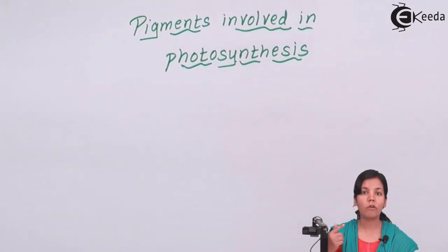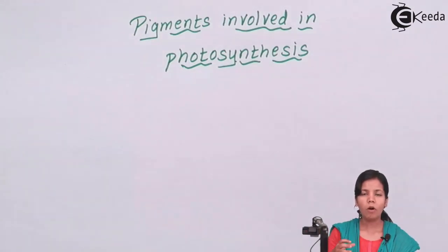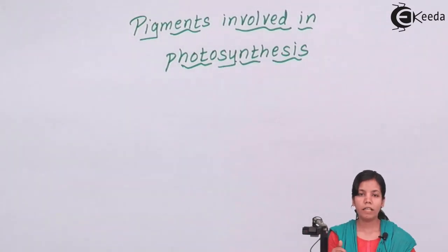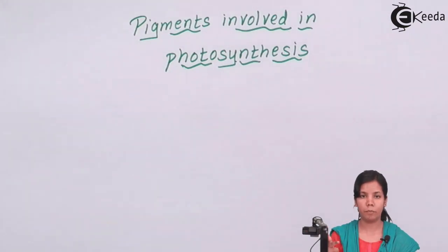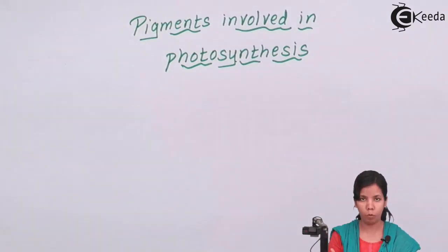Remember the structure of the chloroplast? Inside the grana there were certain pigments — these are those photosynthetic pigments. Among all the photosynthetic pigments, chlorophyll A is the most important one. It is blue-green in color and shows maximum absorption of energy, absorbing the most amount of sunlight.